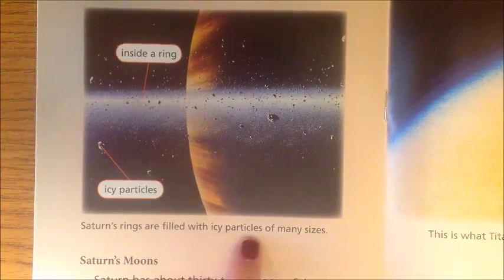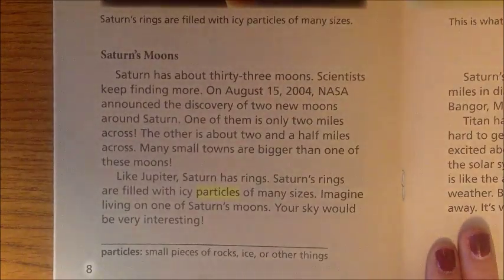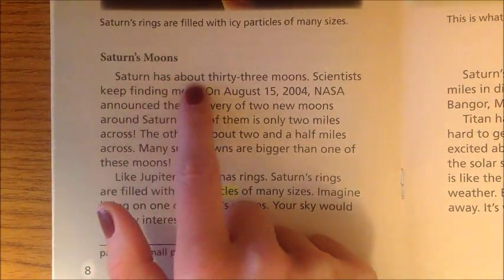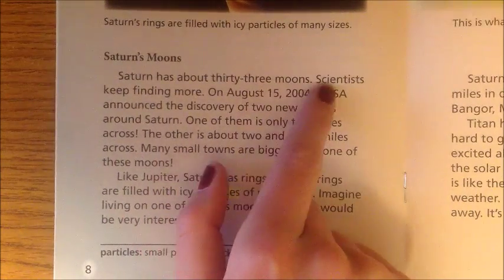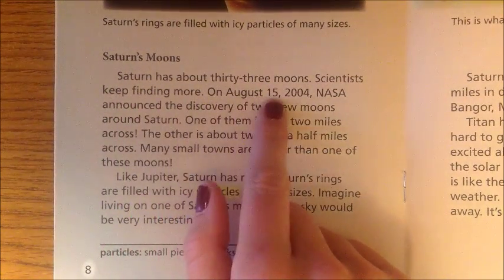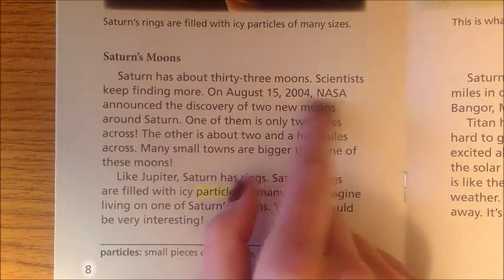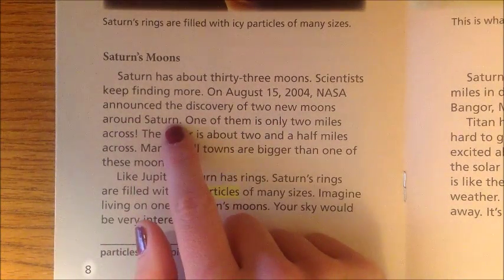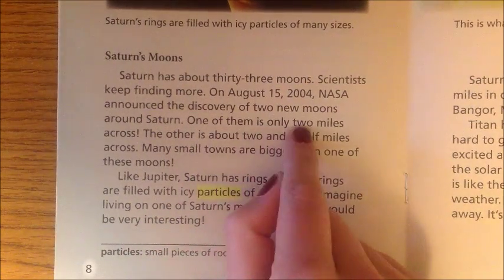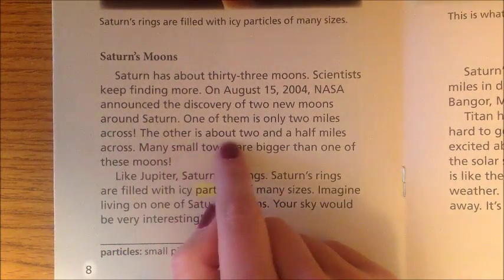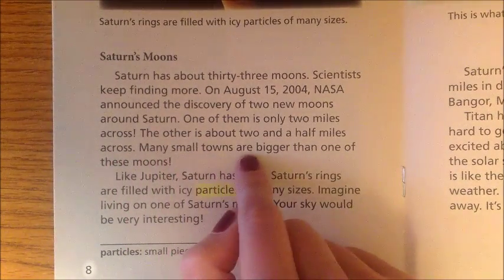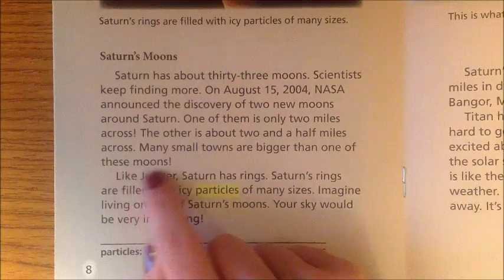Saturn's rings are filled with icy particles of many sizes. Saturn has about 33 moons, and scientists keep finding more. On August 15, 2004, NASA announced the discovery of two new moons around Saturn — one is only two miles across, and the other is about two and a half miles across. Many small towns are bigger than one of these moons.